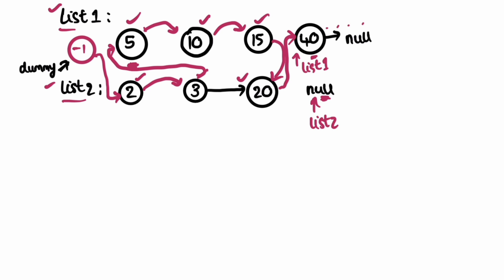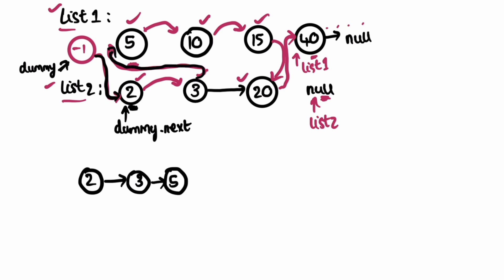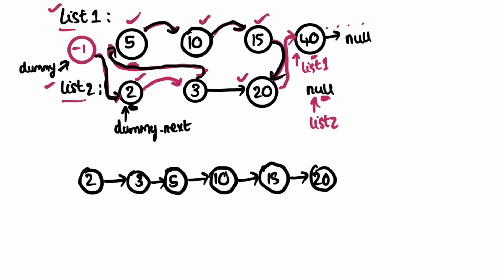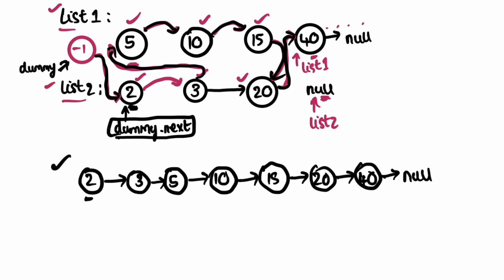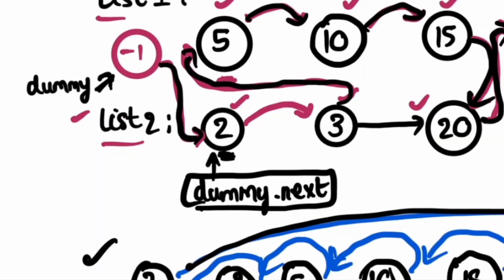We return dummy dot next — dummy is pointing to the dummy node we created, so dummy dot next gives us the head of the merged list. The final merged list is: 2 → 3 → 5 → 10 → 15 → 20 → 40 → null, which is in ascending order. So dummy dot next is our answer.